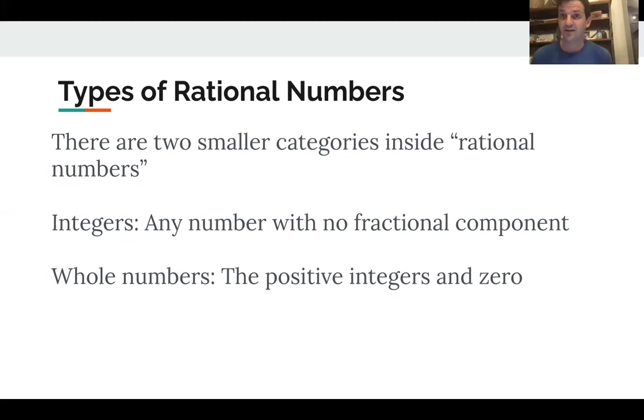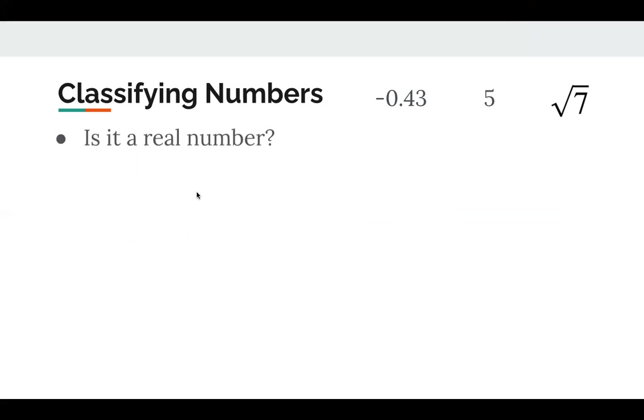So I might ask you to take a number and categorize it, classify it. So let's classify a couple of these numbers. Well, the first one, first thing we do is we say, is it a real number? Meaning, is it on the number line? So let's do that with our first example, -0.43. Is that a location on the number line? Sure. It's between negative one and zero. So it is a real number.